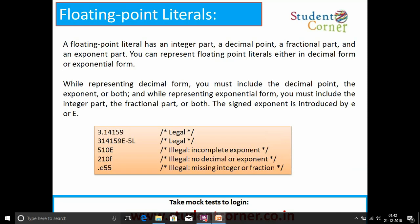Floating-point literals. A floating-point literal has an integer part, a decimal point, a fractional part, and an exponent part. You can represent floating-point literals either in decimal form or exponential form. While representing decimal form, you must include the decimal point, the exponent, or both. While representing exponential form, you must include the integer part, the fractional part, or both. The signed exponent is introduced by e or E.